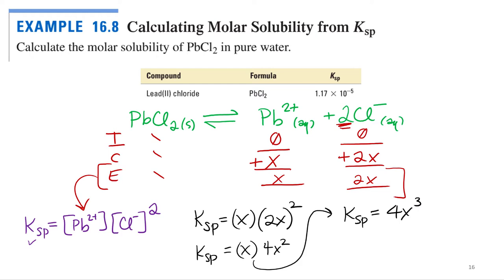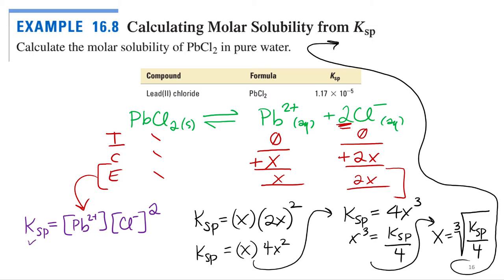Alright, so what do we do next? Divide both sides by 4? So we've got x cubed equals Ksp divided by 4. Then what do I do? Cube root. Cube root of both sides. So I get x equals the cube root of Ksp divided by 4. And I've successfully ran out of room, so I'm going to have to take this. Let's do it here. Let's do it here. So x equals the cube root, and we were given Ksp, right? 1.17 times 10 to the negative 5th, all over divided by 4.